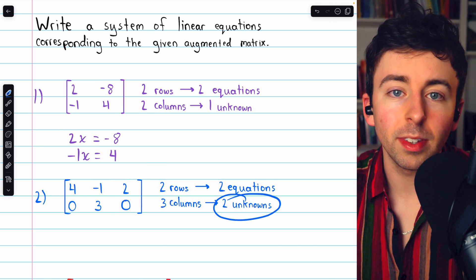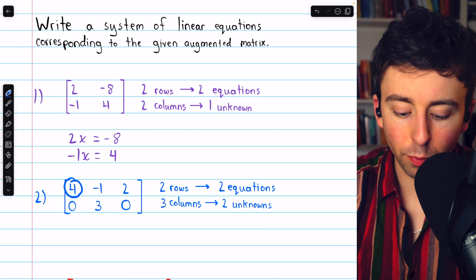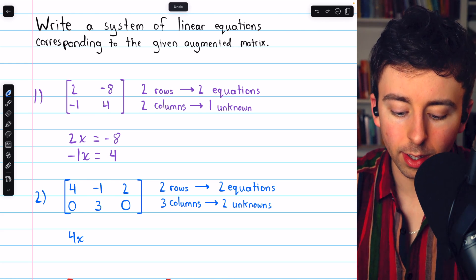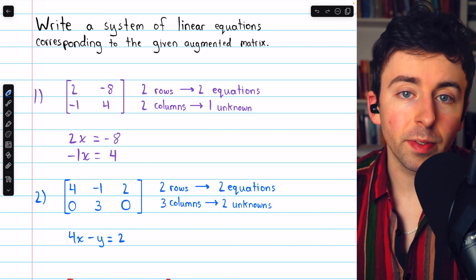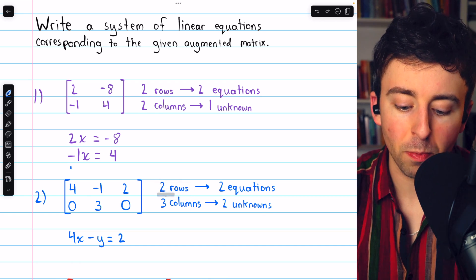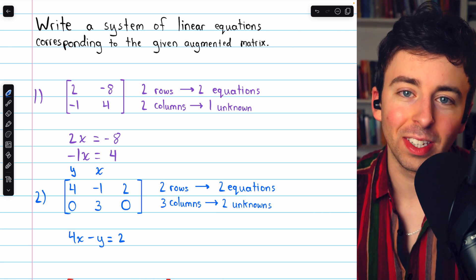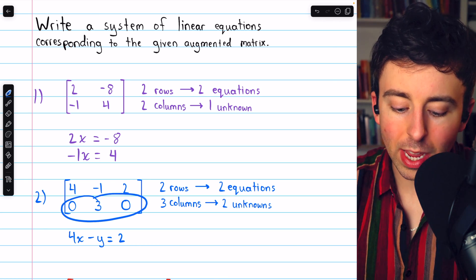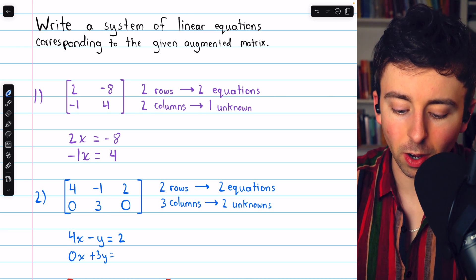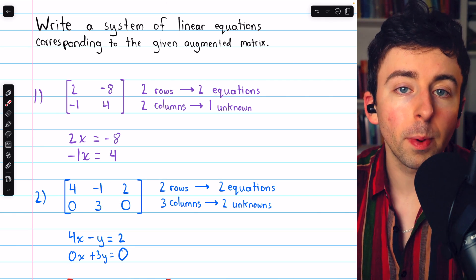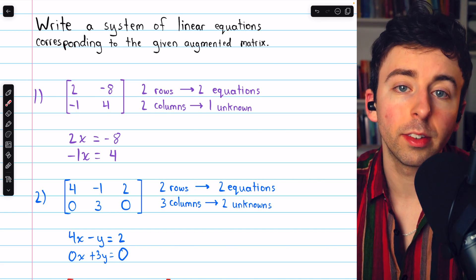This time, we'll need two unknowns. What we call them is up to us. X and Y are common choices. From the first row, we get our first equation: 4 times X plus negative 1 times Y, or just minus Y, equals this constant of 2. And remember that what we call the variables doesn't really matter, so we could have let the first column represent the coefficients of Y, and the second column represent the coefficients of X. That's just a bad idea because it goes against convention, but you could do it if you like. From the second row, we have that 0 times X plus 3 times Y is equal to this constant of 0. Again, note how each row corresponds to an equation, and each column corresponds to the coefficients of a single variable, or, in the case of the last column, corresponds to constants.